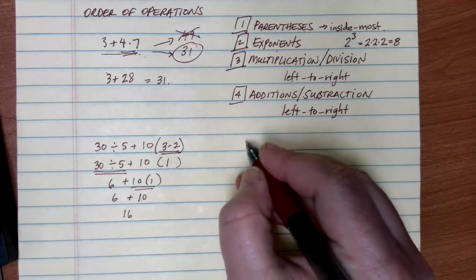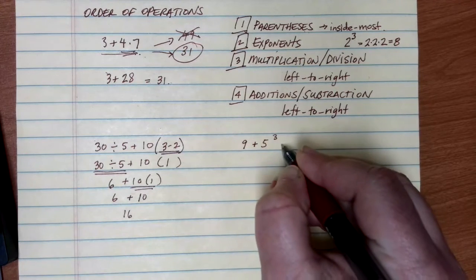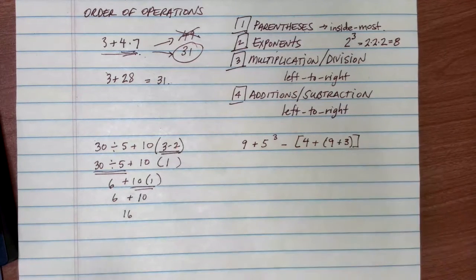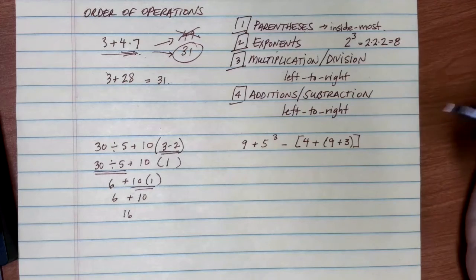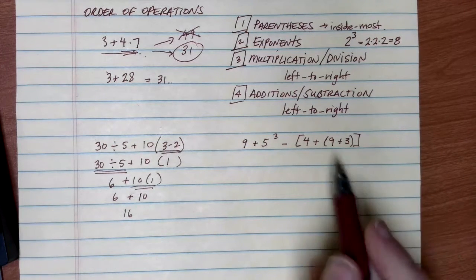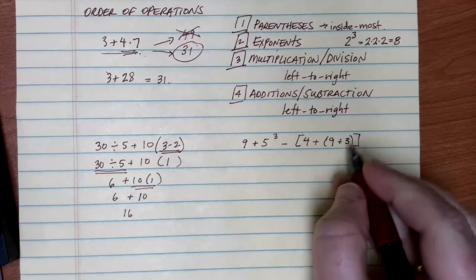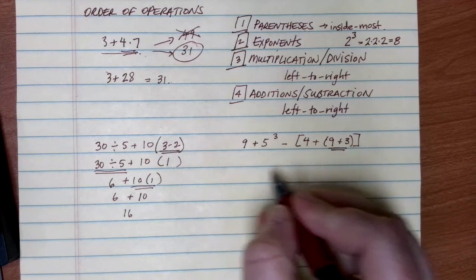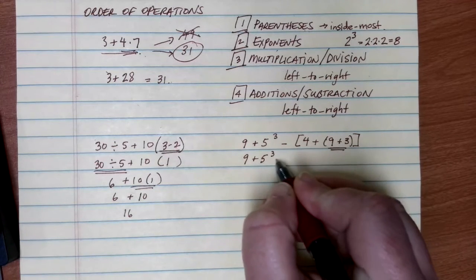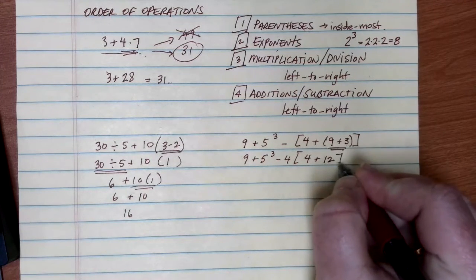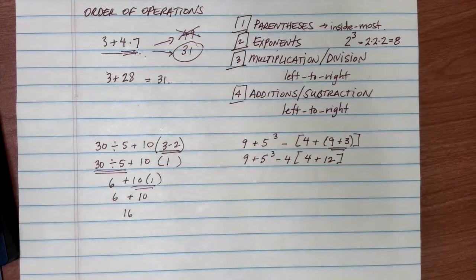Let's take a look at another example: 9 plus 5 to the third power minus 4 plus 9 plus 3, where parts are in brackets and parentheses. Going through our checklist, the first thing is parentheses. We have both brackets and parentheses, so we start at the innermost set. The innermost values are 9 plus 3, so we do that first: 9 plus 3 equals 12.